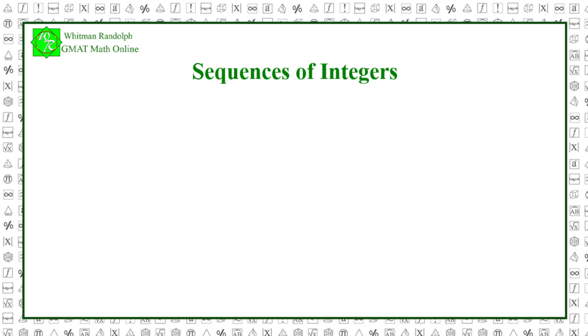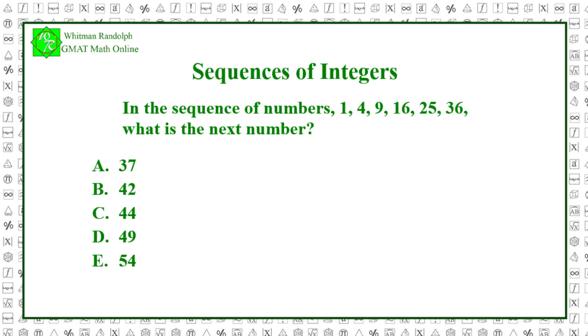There are many other types of sequences. Here are some examples. In the sequence of numbers 1, 4, 9, 16, 25, 36, what is the next number? Here are some possible answers.